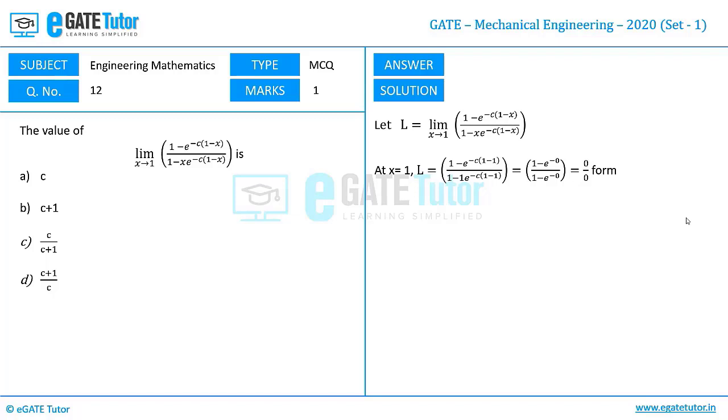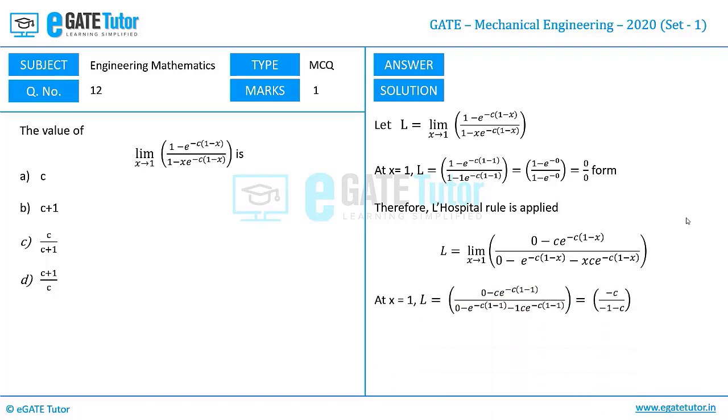So let us try to differentiate the numerator and denominator separately by applying L'Hospital's rule. So this is what we get when we differentiate the numerator and denominator separately. Now let us try to substitute x equals 1 in the given limit value.